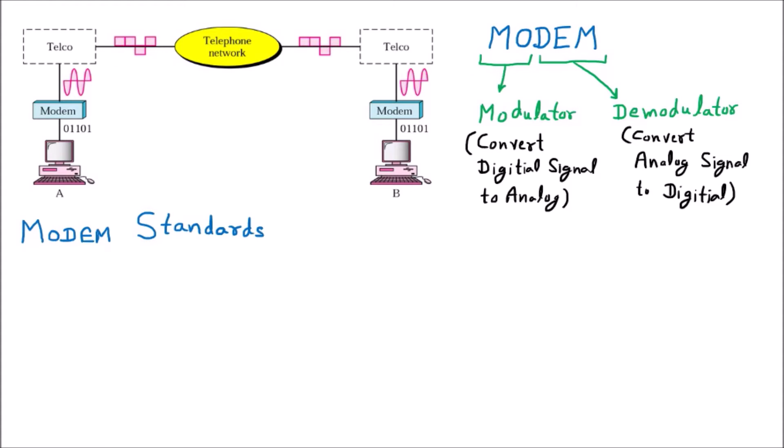We are discussing the modem standards — how many types of standards are there for the modem in the market. Talking about modem standards, we have three categories: the first one is the Bell modem, second is the ITU-T modem, and the third one is the intelligent modem.